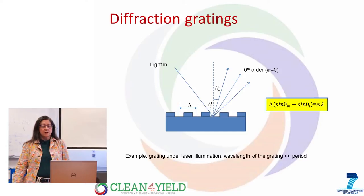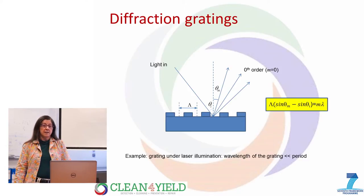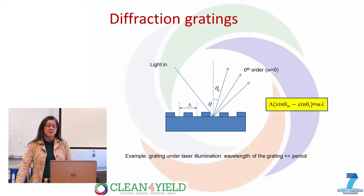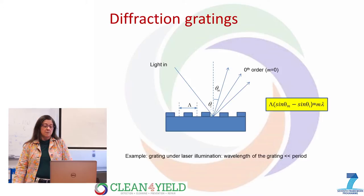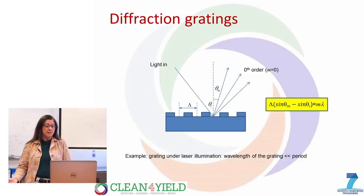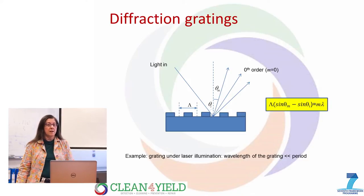There is an equation which relates the period of the periodic structure with the angle of incidence of the light and the angle of the scattered light. There is the zero order, which is the non-scattered part, and the higher orders, which will be the first and second orders. The relation shown in the yellow square relates the period capital lambda, the sine of the angle incident, the sine of the angle scattered, the order of scattering given by m, and the wavelength of the light.